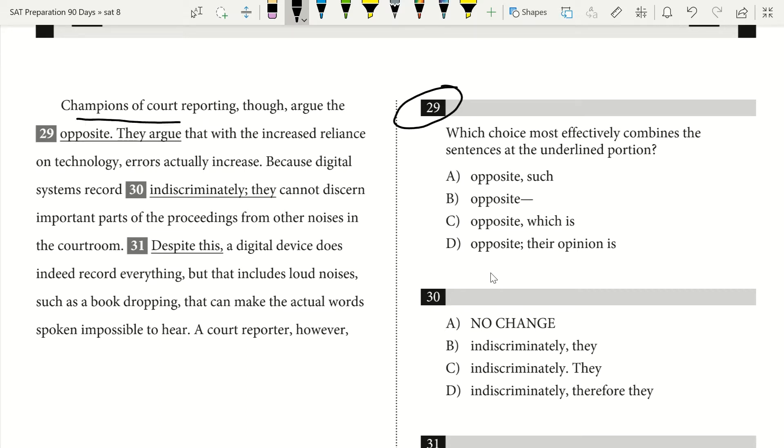If we read our sentence, we have champions of court reporting though, argue the opposite. And then we see we have 'they argue,' which is obviously an immediate red flag to me because I know I just said champions of court reporting, which is they, and I say argue right here. So saying 'they argue' again is obviously something I want to get rid of because that's wordy.